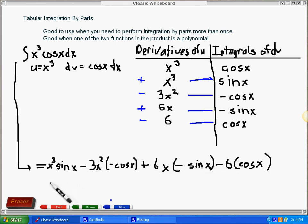We just change the signs, or we clean it up a little bit. Like the second term, I have a negative times a negative, so that's going to be a positive. My final answer will look like x to the third sine x plus 3x squared cosine x minus 6x sine x minus 6 cosine x.